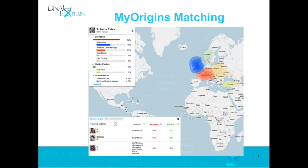Under MyOrigins — that's your ethnicity portion — when you go in and look at the map, at the left-hand side under Shared Origins, if you opt in, it will show you all the people that match you on the same ethnicity. So if I'm looking for someone who also has Native American ancestry, that doesn't mean I match them on that line, but it is a place to begin looking. It shows you what the common ancestry is that you share with them. It's a hint — all of these are hints.